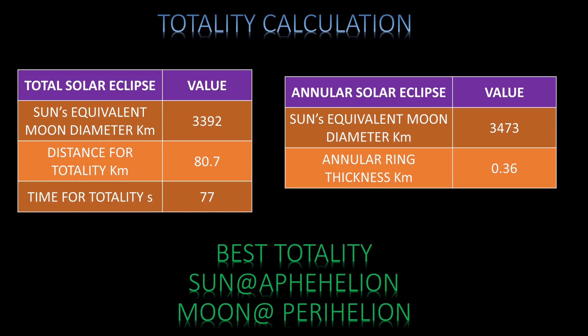The best time for totality is obtained when the sun is at its farthest, known as aphelion, whereas the moon needs to be at its closest, known as perigee.